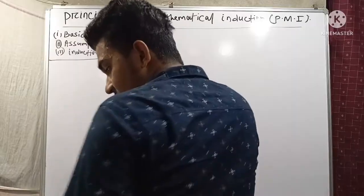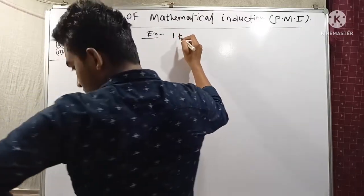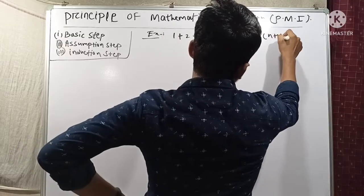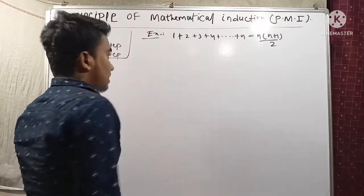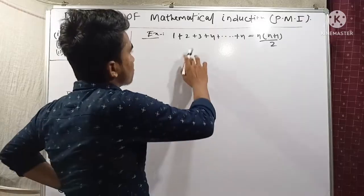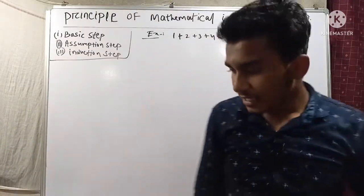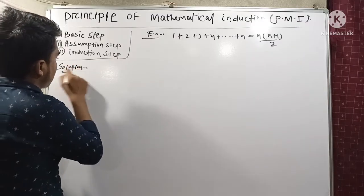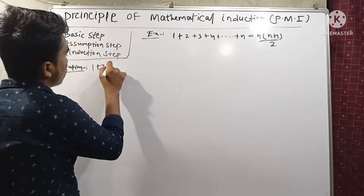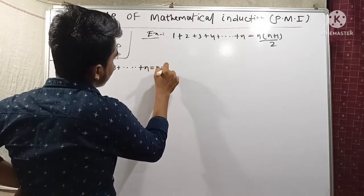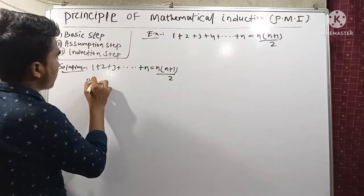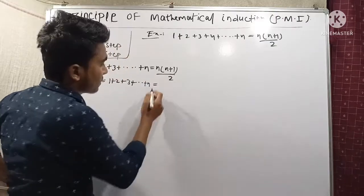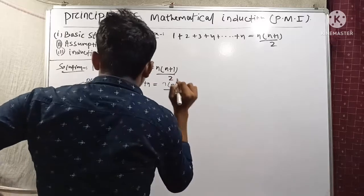The question is: 1 + 2 + 3 + 4 + ... + n = n(n+1)/2. So let P(n) be the statement: P(n) = 1 + 2 + 3 + ... + n = n(n+1)/2.